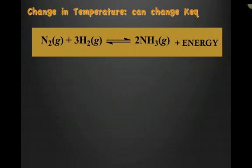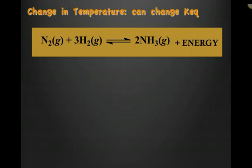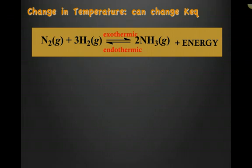What happens if we change the temperature in a system at equilibrium? Remember, temperature is the only thing that can actually change the equilibrium constant. We are going to see how the equilibrium shifts when we change temperature. In this example, nitrogen plus hydrogen yields ammonia and energy — the energy is released in the forward direction, meaning the forward direction is exothermic and the reverse direction is endothermic.